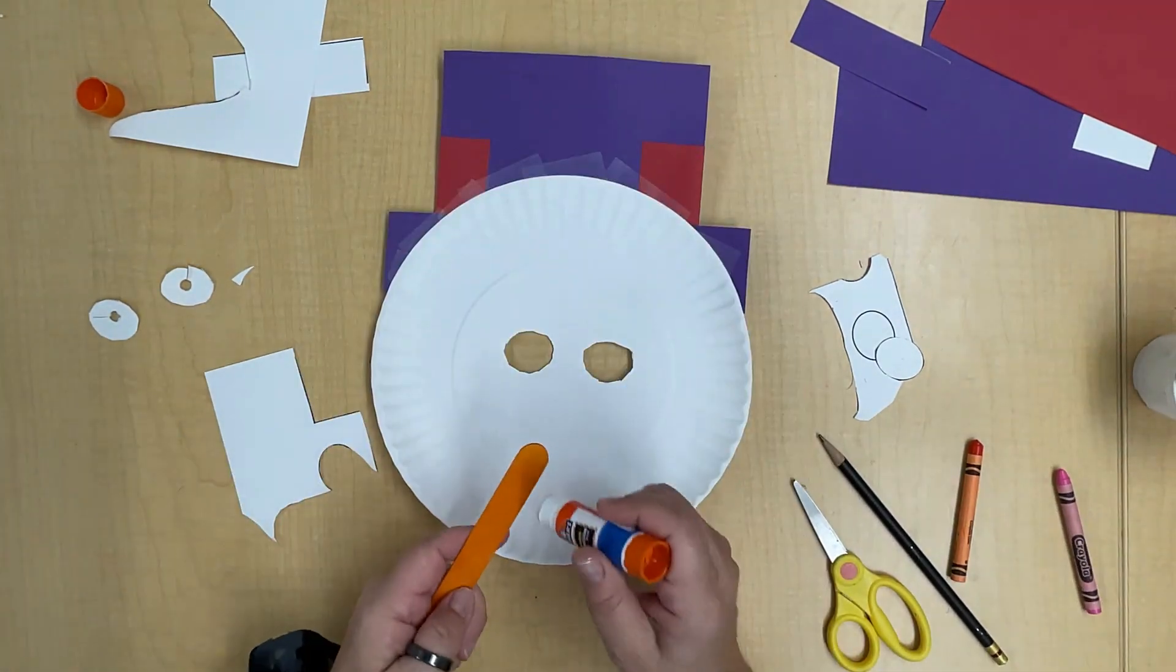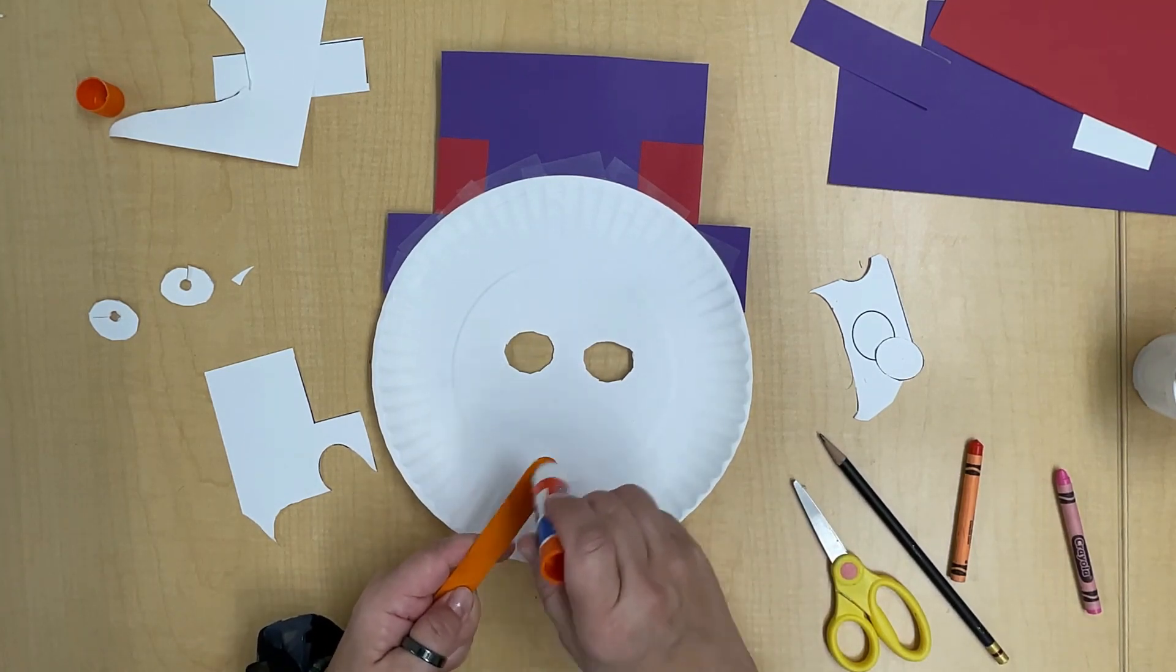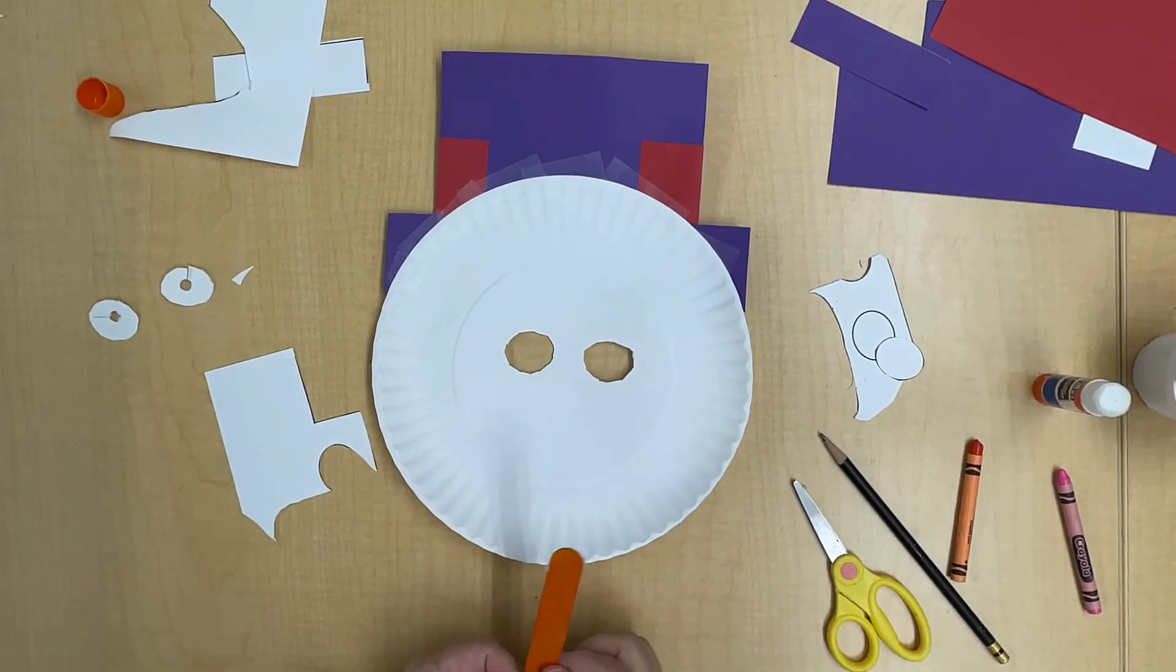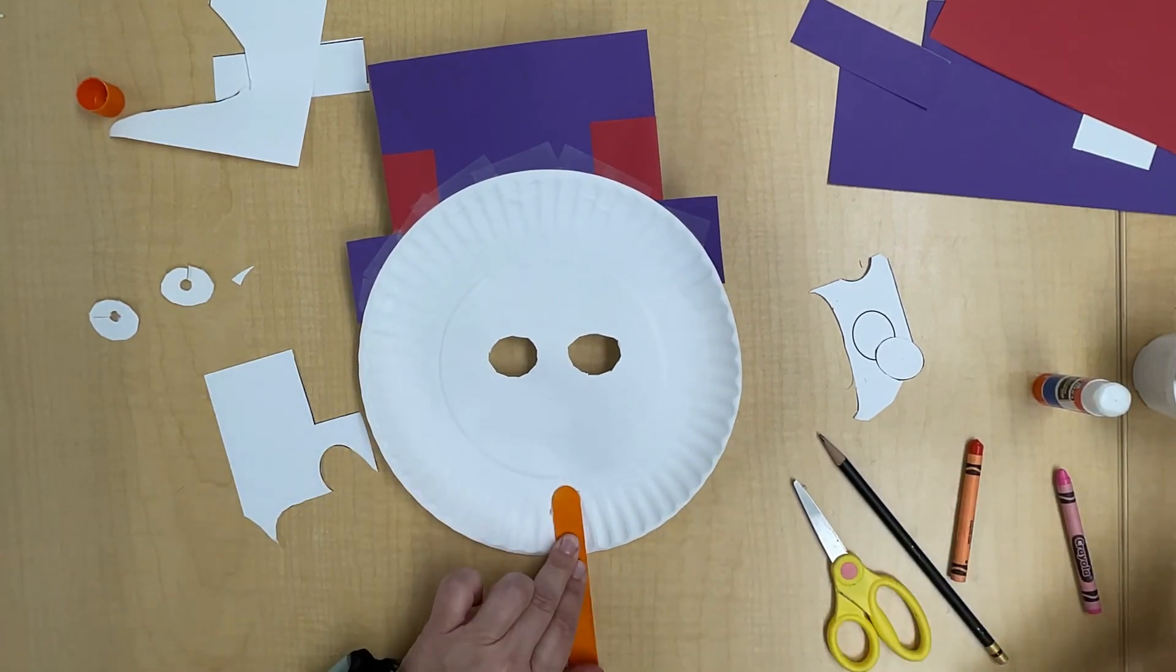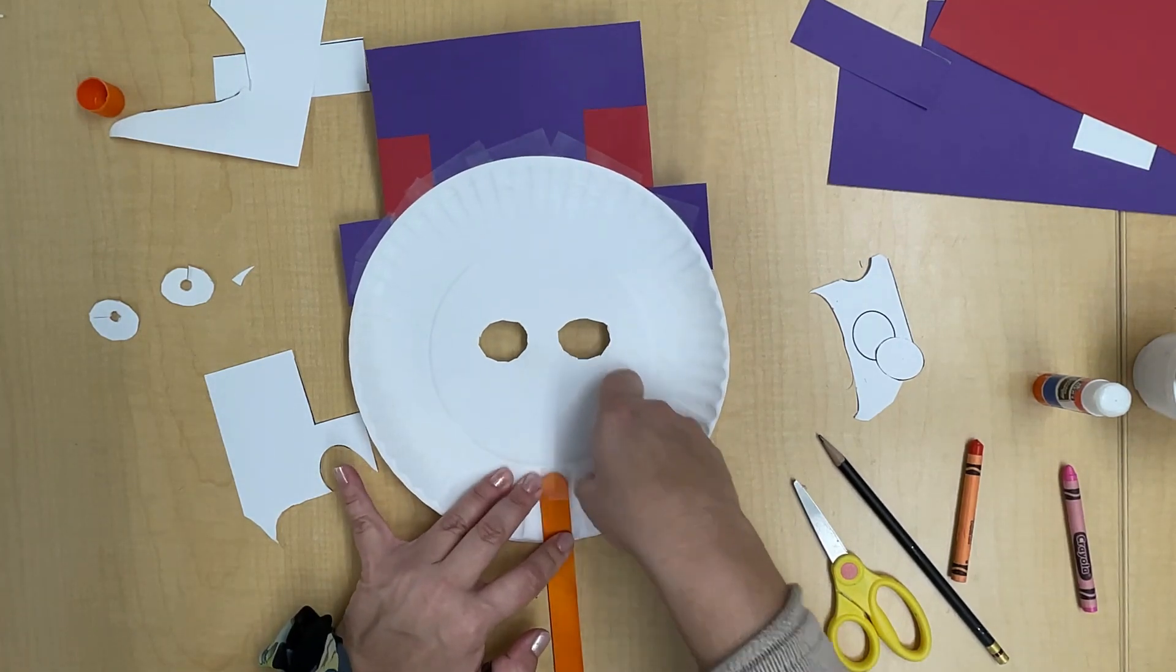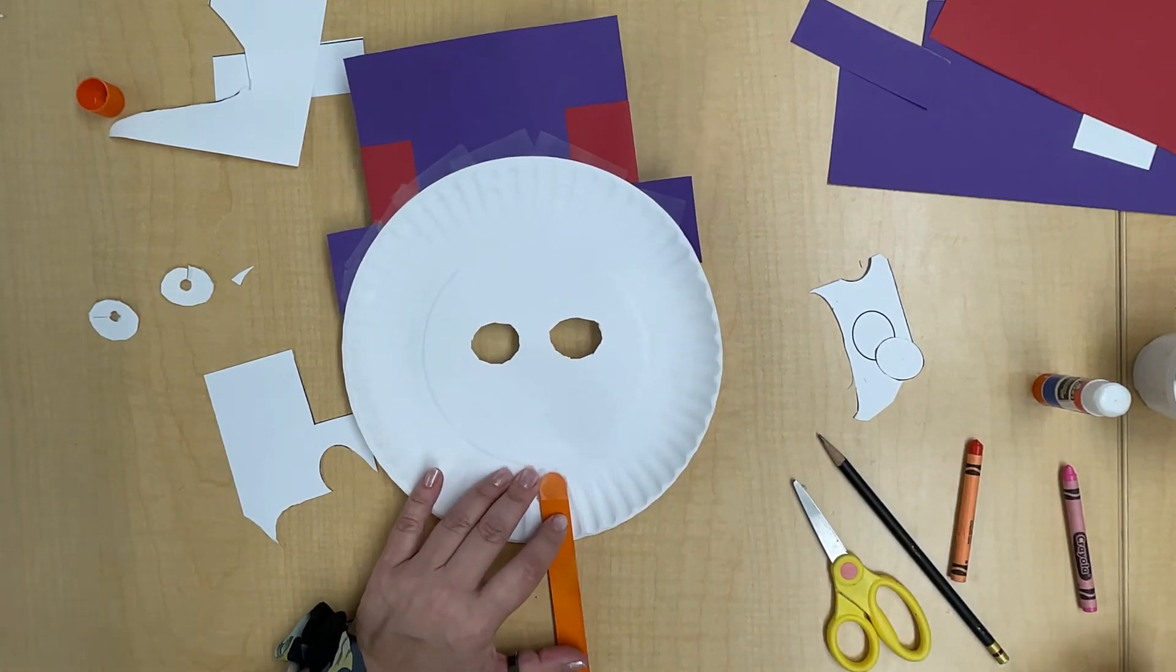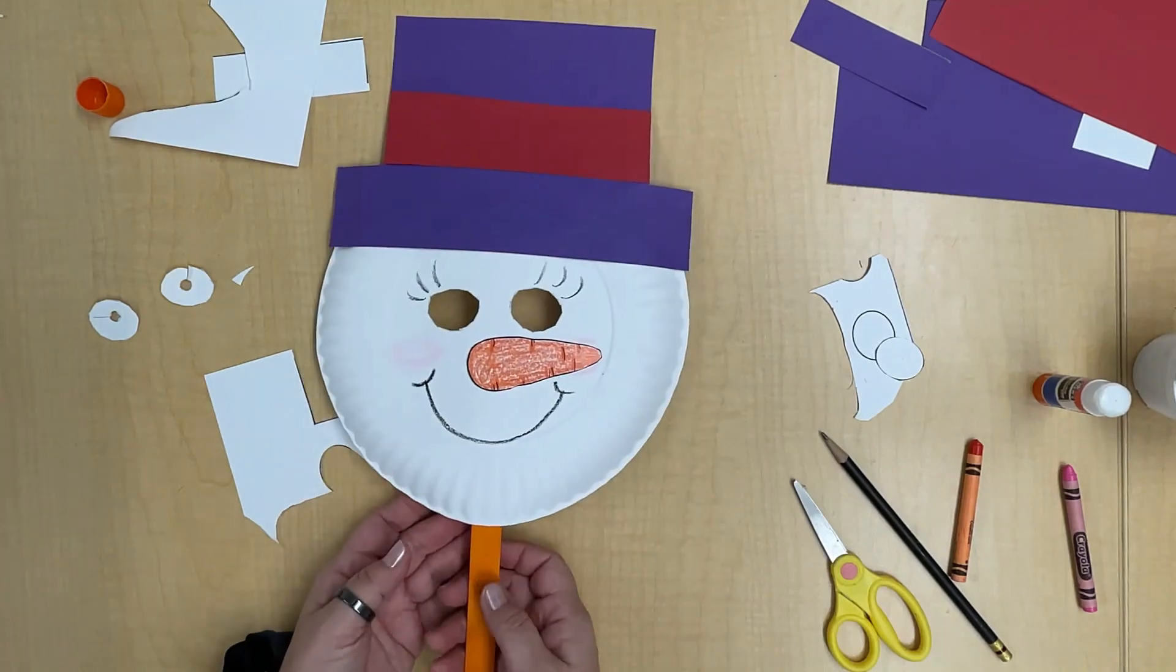Now put glue on the stick, the part that's going to come in contact with the plate, so probably an inch and a half or so. Now stick it onto the paper plate. Grab some tape and now tape it on. Use about three or four pieces of tape to hold that stick in place. And there you have it.